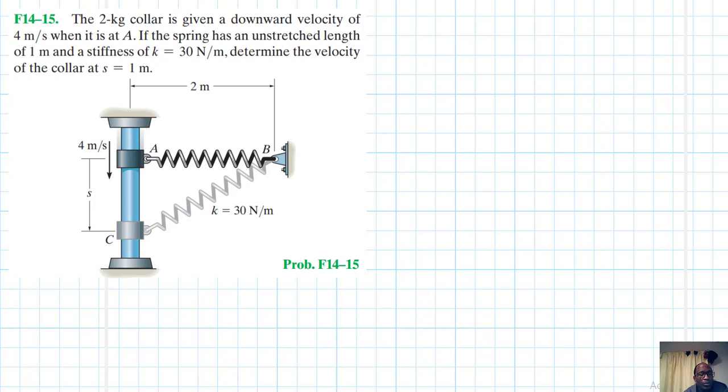Hello, I welcome you all. The problem reads that the 2 kg collar is given a downward velocity of 4 meters per second when it is at A. If the spring has an unstretched length of 1 meter and a stiffness of k equal to 30 newtons per meter, determine the velocity of the collar at s equal to 1 meter.